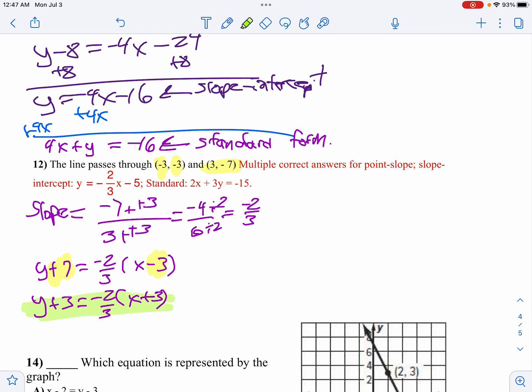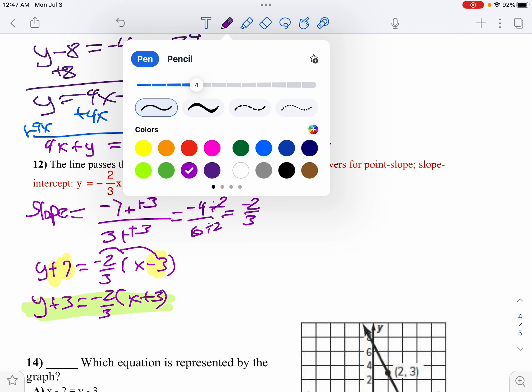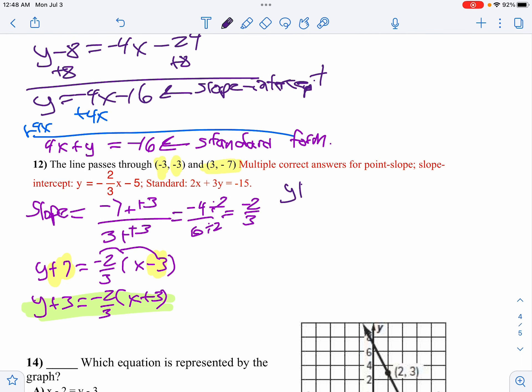So I could have that in point-slope form also. Now I'll do the same thing like I did in the last one. Let's distribute my negative 2 thirds inside. And I think I'll use the first equation here. So I'm going to get y plus 7 equals negative 2 thirds times x. So negative 2 thirds x, and then my 3's cancel. Negative times a negative is a positive, so I'd have plus 2. And there is your slope-intercept.